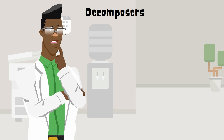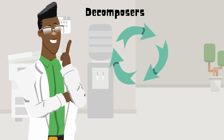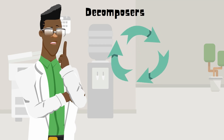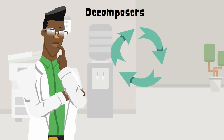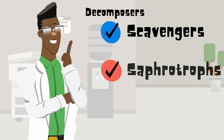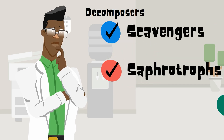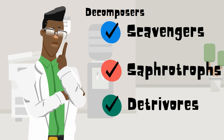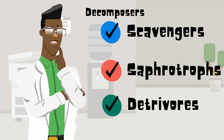Next are the recyclers, commonly called decomposers. Scavengers, saprotrophs, and detritivores are examples.